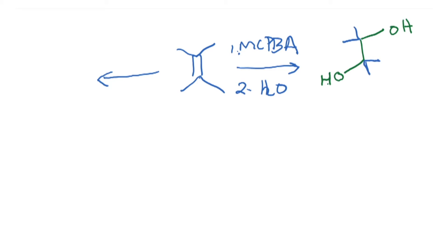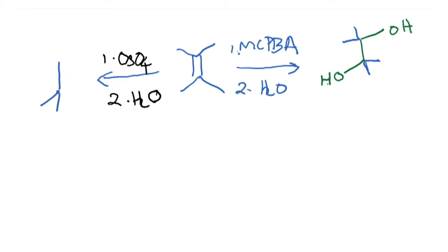The second method is to do an osmium tetroxide reaction followed by hydrolysis. We also discussed that you can use N-methyl morpholine oxide, and this is going to give you the syn-alcohol.